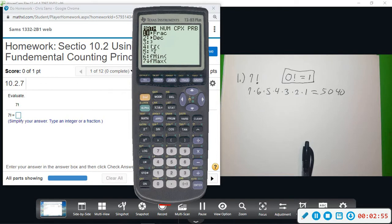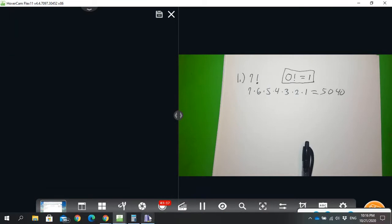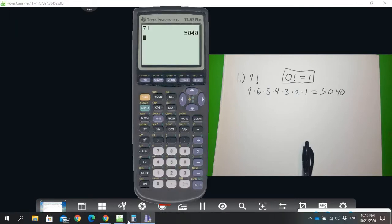pulls up some options. We can go all the way over here to PRB, that stands for probability. If you arrow back and highlight it, notice option number four has that exclamation point for factorial. I'm going to just hit the number four, and so 7 factorial if I hit enter, it just computes it for me: 5040. So just a couple ways that you can work and get that factorial.